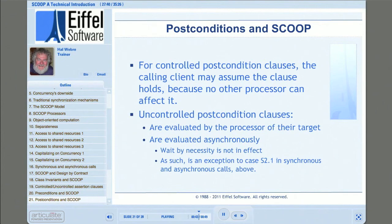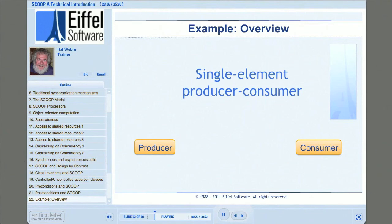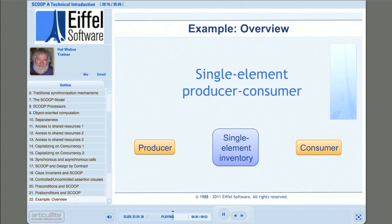Those are the basics of the interaction of SCOOP with Design by Contract. Now let's look at some code from one of the SCOOP examples: the single-element producer-consumer example. The example involves a producer who produces a product — in this case an integer — and a consumer who consumes integers. The producer and consumer share access to an inventory that can contain only one product at a time. The producer can only produce a new product when the inventory is empty, and the consumer can only consume a product when the inventory is full.